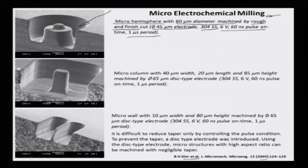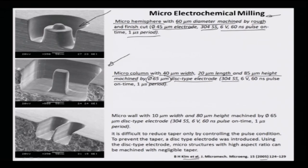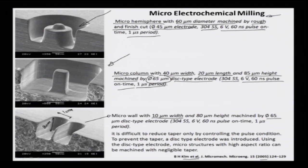Similarly, a micro column with 40 micron width, 20 micron length, and 85 micron height — a very high aspect ratio — was machined by a 65 micrometer disc-type electrode. This is an example of milling where the electrode is rotated, enabling machining at the nanometric level using a 304 SS stainless steel electrode with 60 volt, 60 nanosecond pulse on-time for a 1 microsecond period. A micro wall with 10 micron width and 80 micron height was also machined by the same 65 micrometer diameter disc-type electrode.